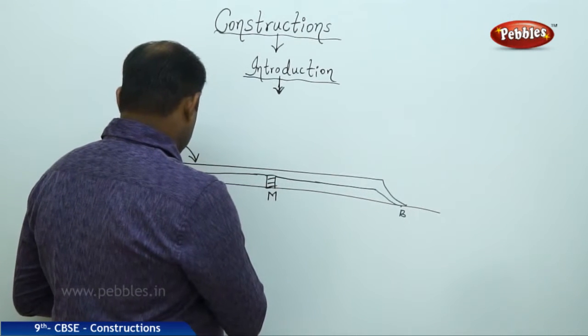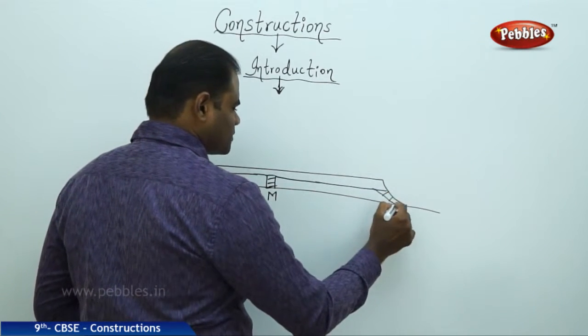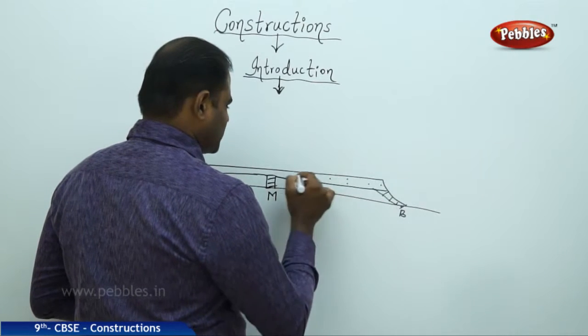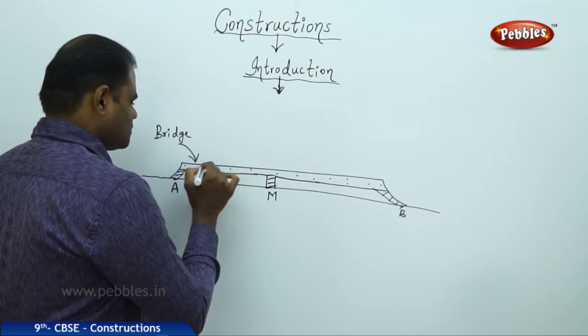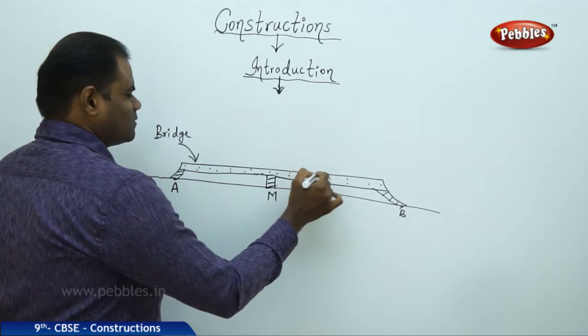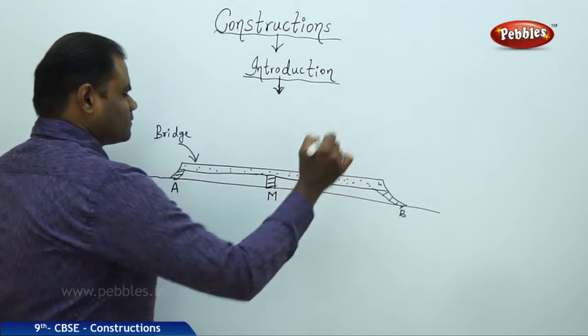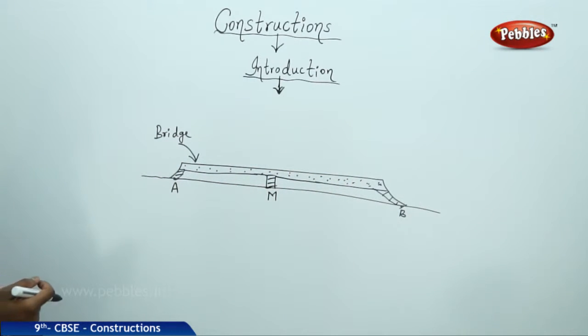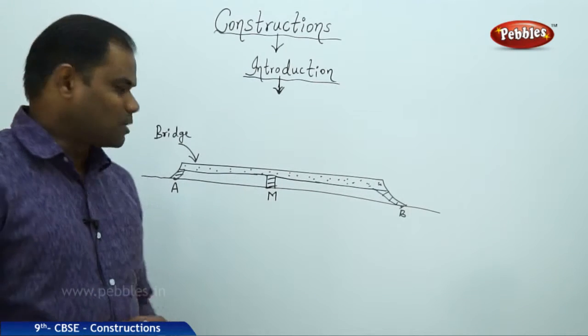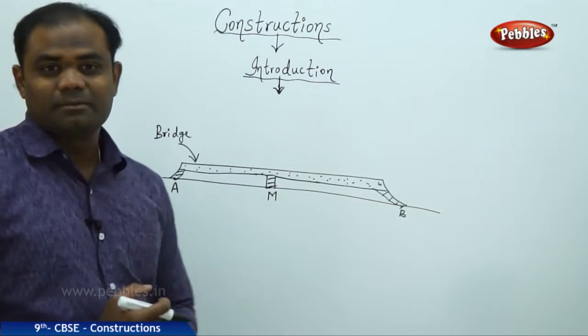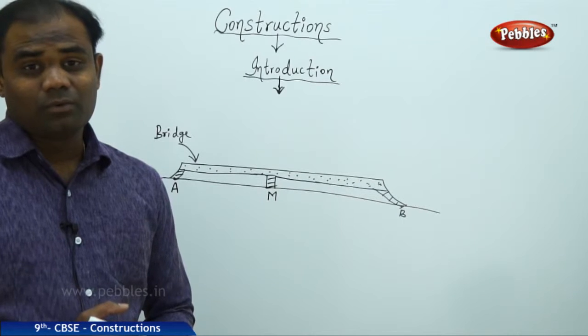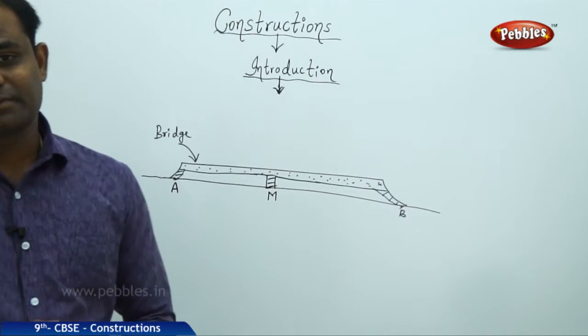And then he uses the three types of pillars and then constructs a bridge out here. So here is the bridge supported by the pillar exactly in the middle. So here is how we understand constructions.